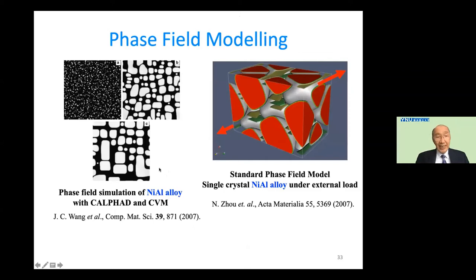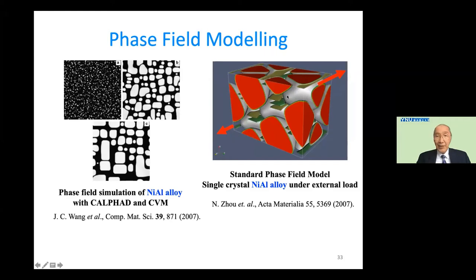Previous phase field modeling for nickel-aluminum alloys uses CALPHAD and CVM (cluster variation method). CALPHAD is a semi-empirical approach to reproduce the phase diagram, combined with simulation for the nickel-aluminum alloy. Phase field modeling can also be applied under external load — for example, tensile force is applied and the sample elongation is also treated by the phase field model.